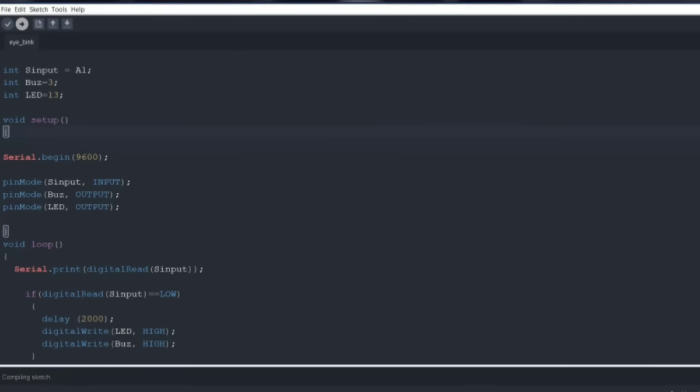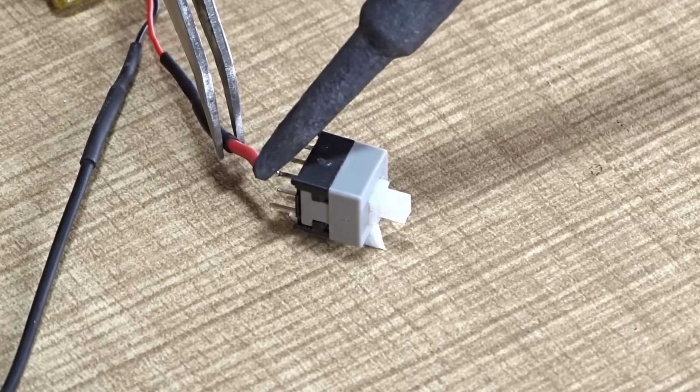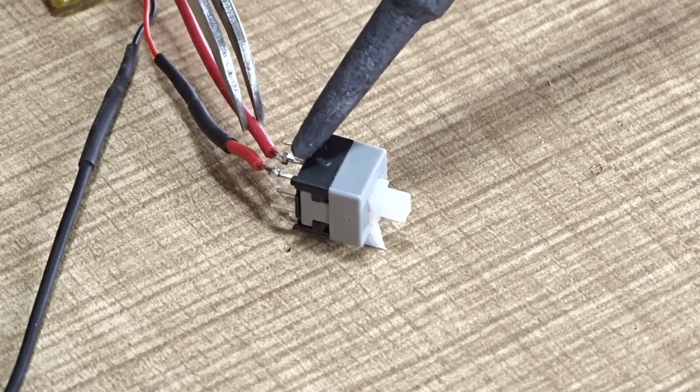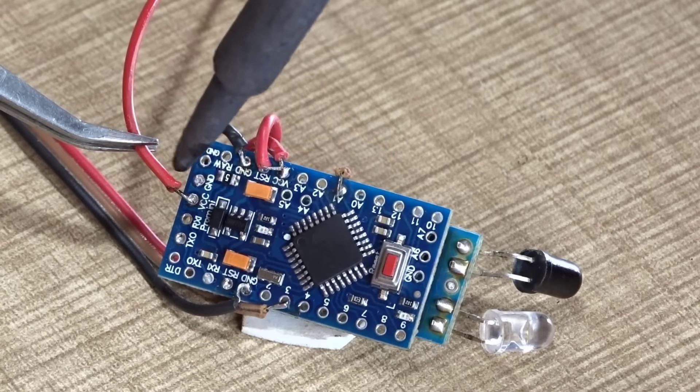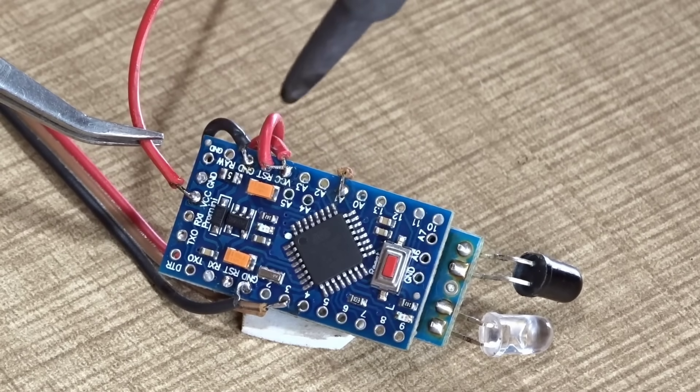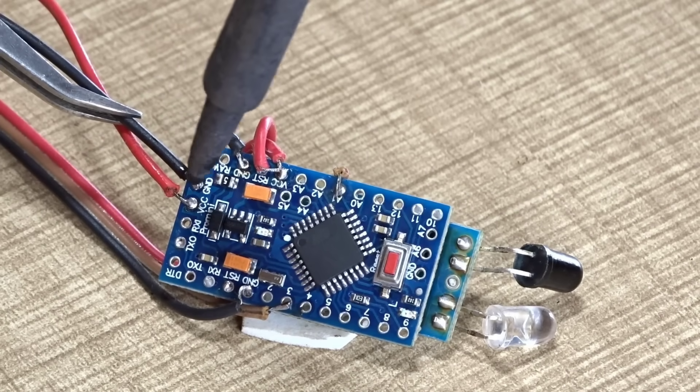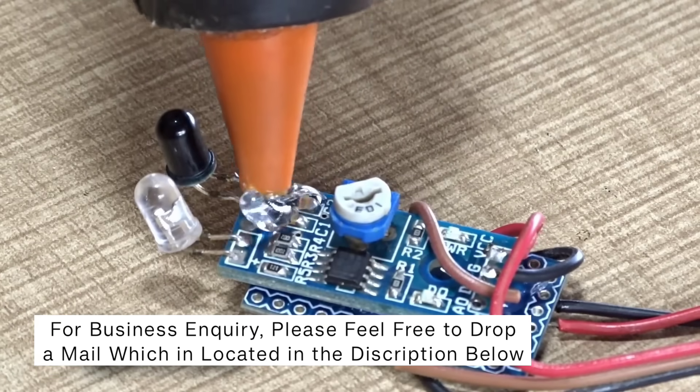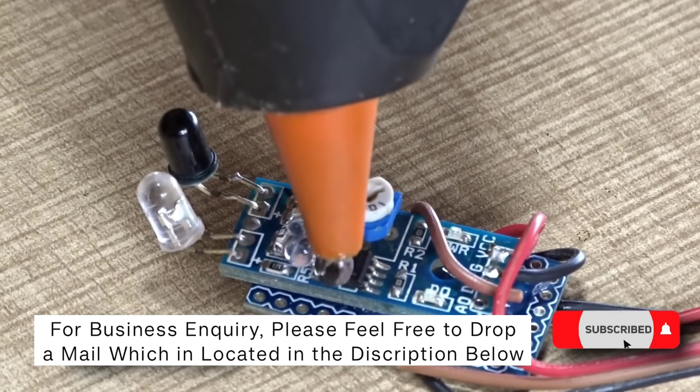Now let's move ahead and work on the final integration of our circuit with the glasses frame. To begin with, we're going to use a small push-button switch, which will serve as a manual control for powering the circuit on or off. This button will be connected directly between the VCC and GND pins of the Arduino Pro Mini.